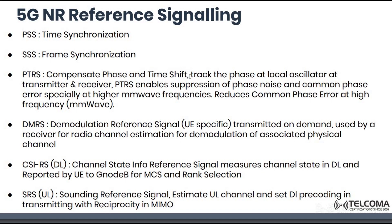DMRS (Demodulation Reference Signal) is transmitted on demand and used by the receiver for radio channel estimation and demodulation of the associated physical channel. It is essentially a reference signal used to demodulate the received signal, which may have been modulated using amplitude, phase, or frequency modulation techniques.